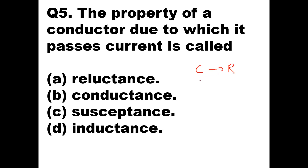In terms of RLC circuits, passing of current is called admittance, and opposition to current is called impedance. If you see only reactive circuits, then susceptance is the passing of current, and reactance is the opposition to the flow of current. So the property of a conductor due to which it passes current is conductance — Option B is the right answer.